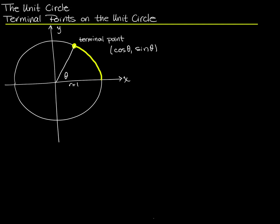That terminal point has coordinates cosine theta, sine theta. Since we're on the unit circle, instead of r cosine theta I just have cosine theta because r is 1. Theta is the angle through which you had to rotate as you traveled along the circle. The coordinates are given by the same cosine comma sine representation as before. When I talk about a terminal point, I'm referring to this point — either where you stopped crawling along the curved circumference, or the end of the line segment radiating from the center. It's the same point regardless.